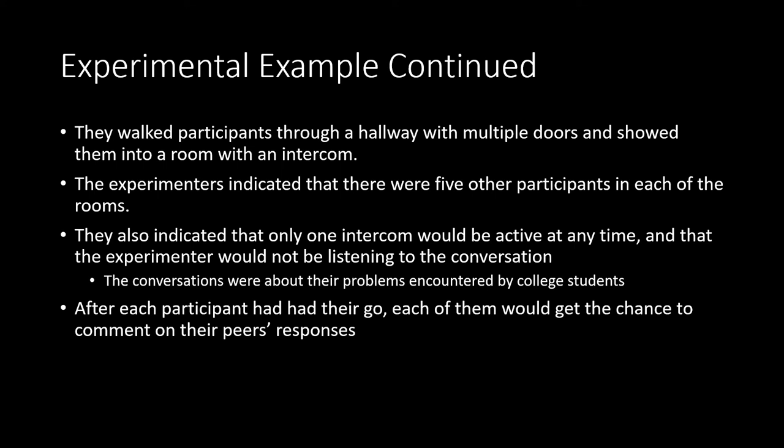The way they conducted their experiment: whenever a participant would show up, they would walk them through a hallway with multiple doors and show them into a room with an intercom. They would indicate to participants that there were other participants in different rooms of a similar nature. The experimenter indicated there were five other participants, one in each room, and that only one intercom would be active at any given time to facilitate speaking, and that the experimenter would not be listening. The specifics of the conversation related to problems they had encountered as they went into college. After each participant had their two-minute chance to speak on their problems, it would go through all participants and then each would get a chance to comment on their peers' responses.